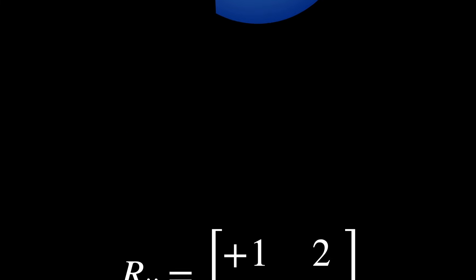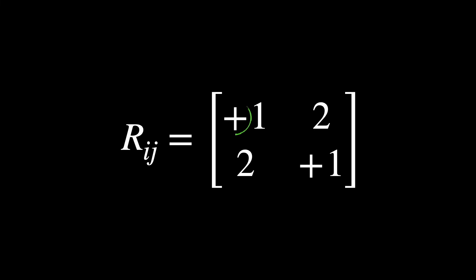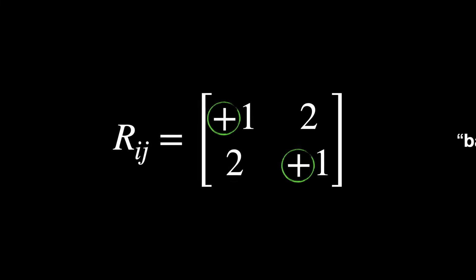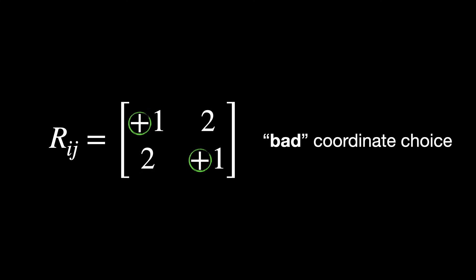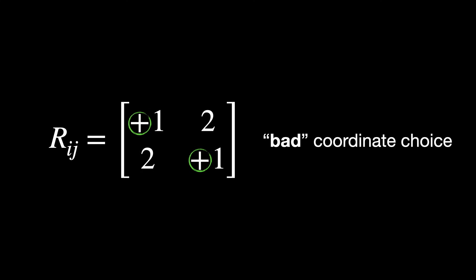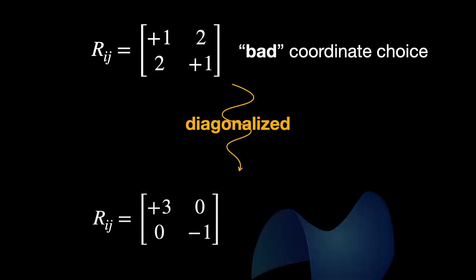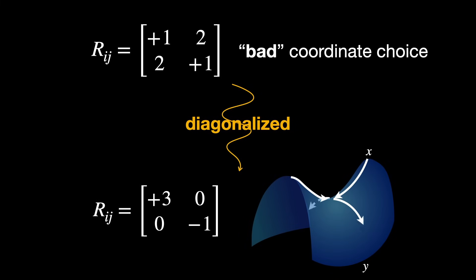Notice an interesting fact. Even though the original Ricci curvature tensor looked positive in all directions, it is just the illusion of the quote-unquote bad coordinate choice. Once diagonalized, we see the true story: curvature pulls pieces together in one direction and pushes it apart in another. The eigenvectors tell us those directions. They are intrinsic geometric objects drawn right inside the surface's tangent space.